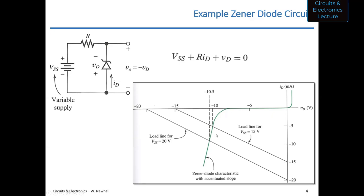This example shows that as you change the source voltage from 15 volts to 20 volts, matching up with the diode's characteristic, the diode voltage only changes by about half a volt — and in reality a real diode might change even less, maybe from −10 to −10.1 volts. The point is that as Vss changes, the output voltage Vo, which equals −Vd, changes very little. This is how a zener diode can maintain a constant voltage when the source voltage is changing.